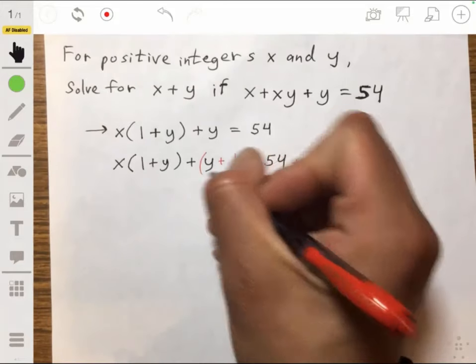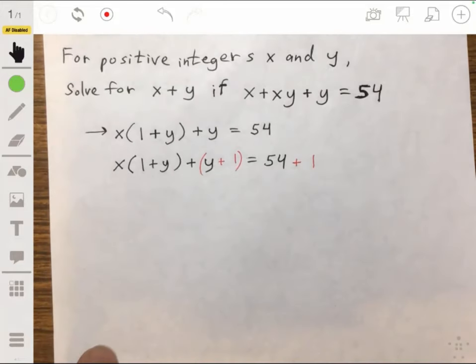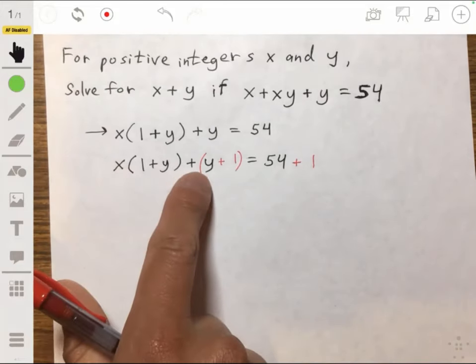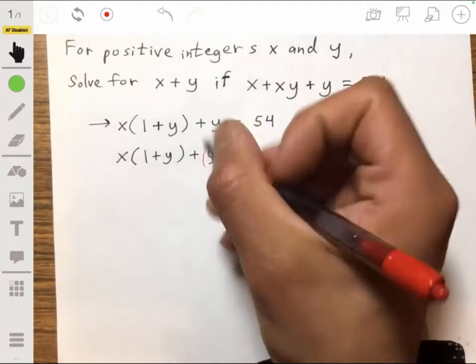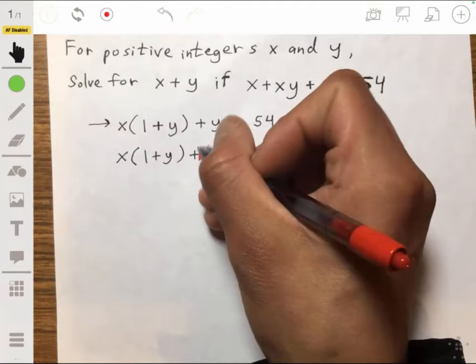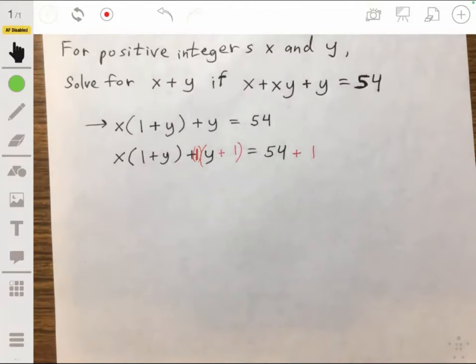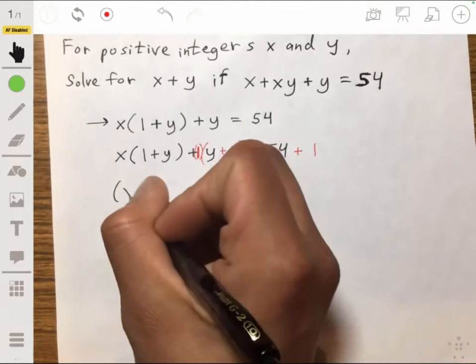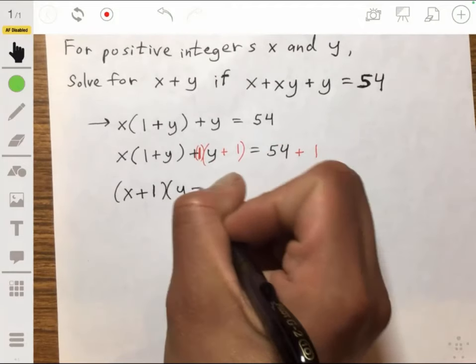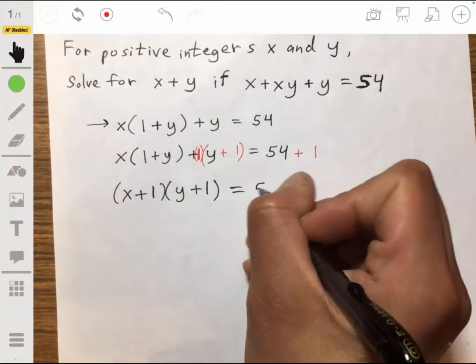Then we have a group of y plus 1 here, and as you understand, this can be multiplied by 1 to create this quantity. So then we can have x plus 1 times y plus 1 on the left is equal to 55.